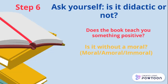Step six: ask yourself a very important question — is it didactic or not? Does it teach you something? Do you get a moral from the book? Does the book teach you something positive? Is it without a moral? Is it moral, amoral, or immoral? If it teaches you something, it is moral. If it does not teach you anything good or anything negative, it is amoral. If it is teaching you something wrong, it is immoral. Examine the book on these terms: moral, amoral, or immoral.